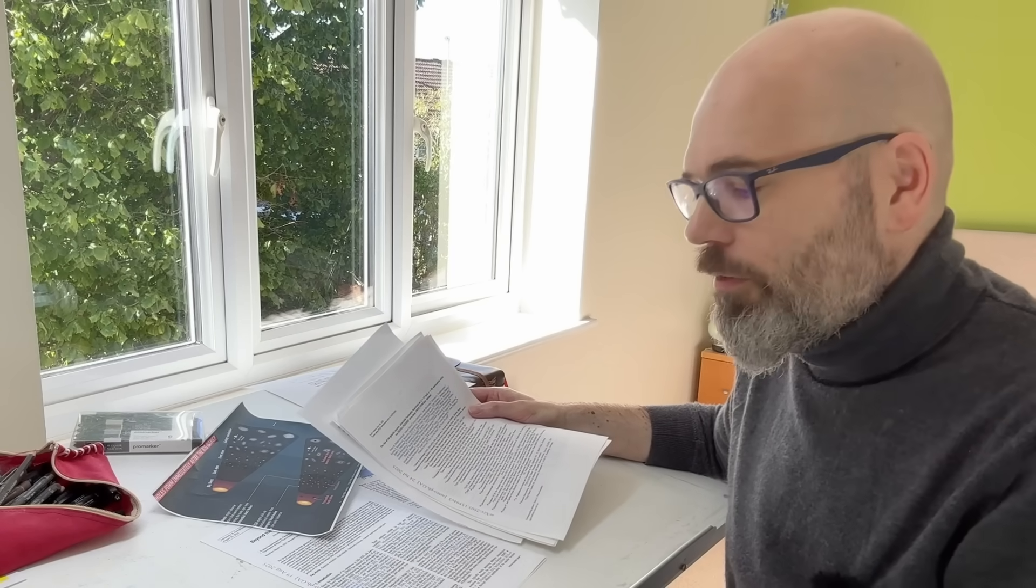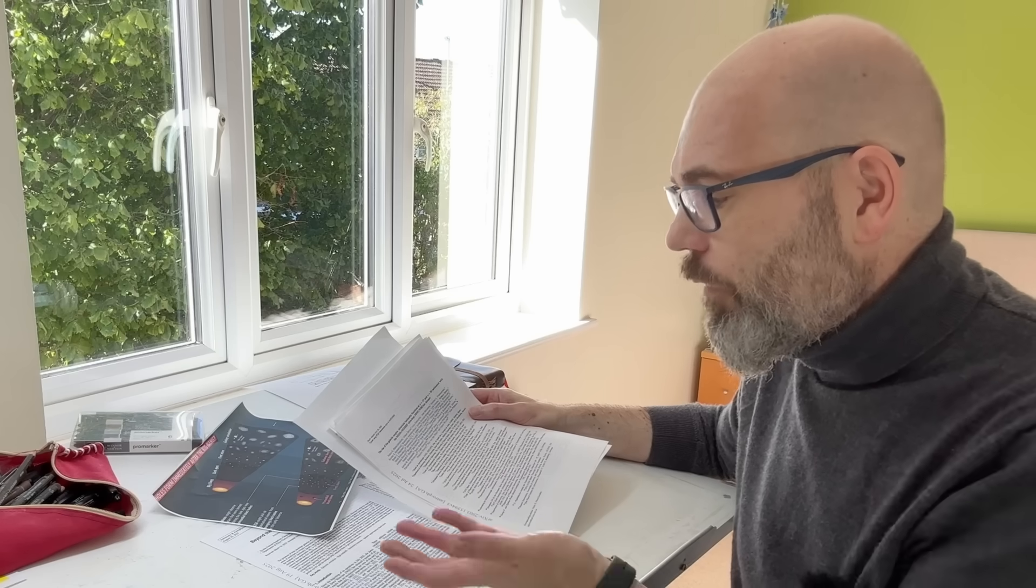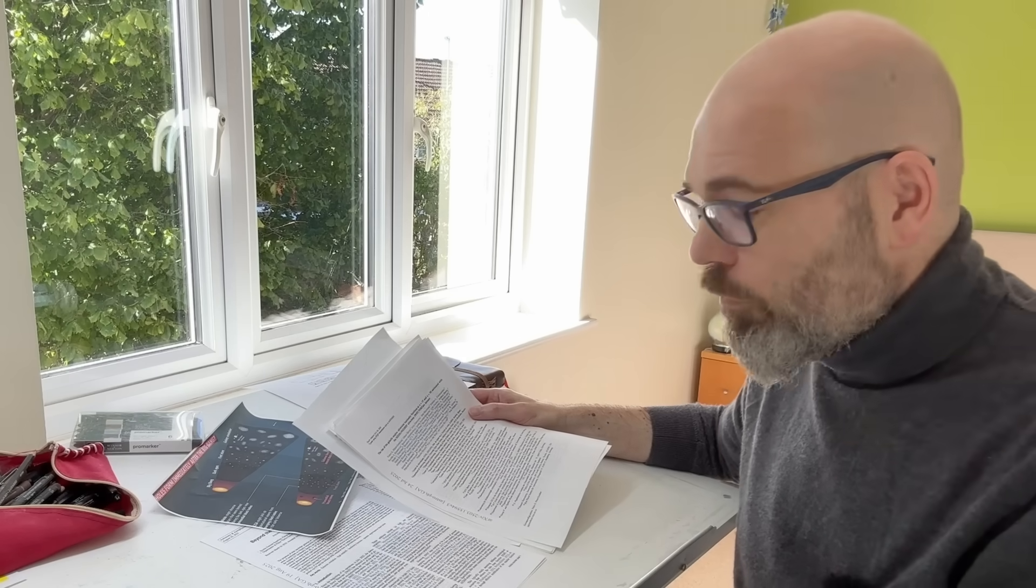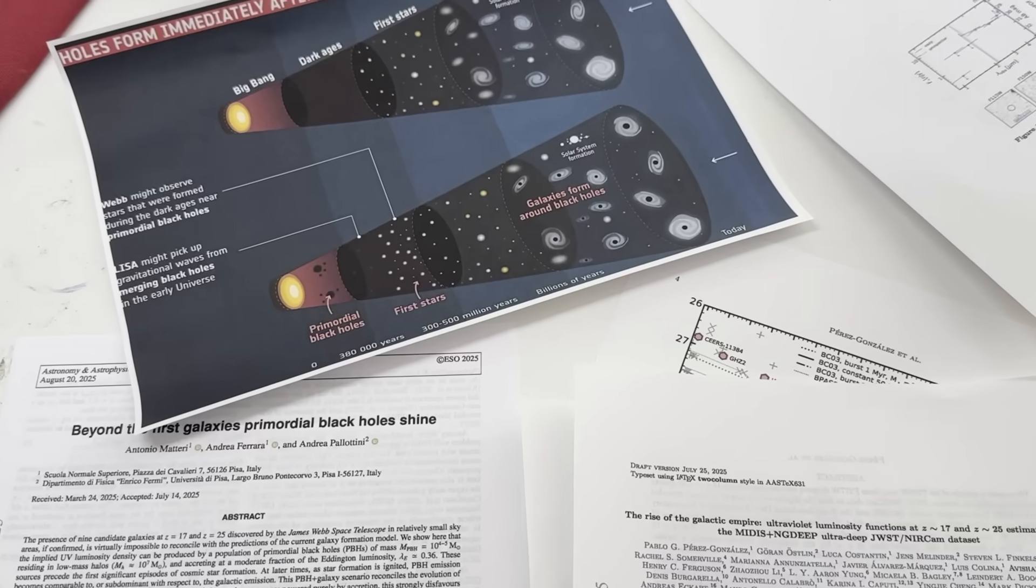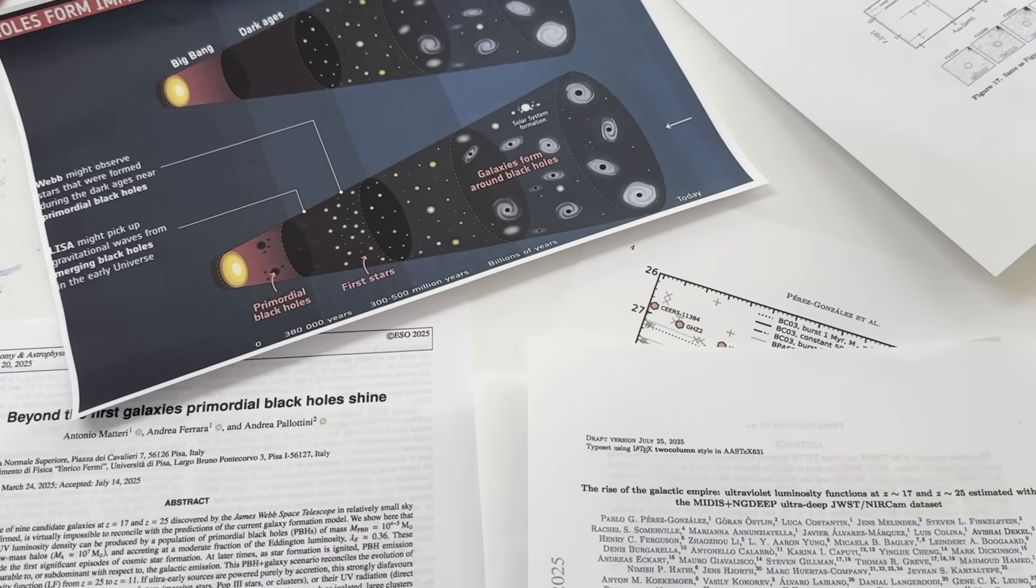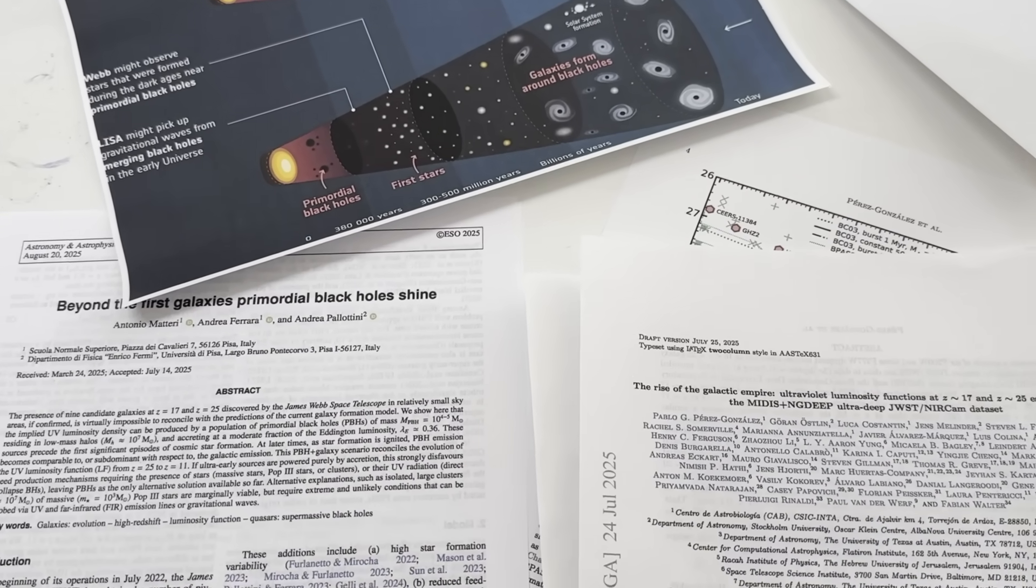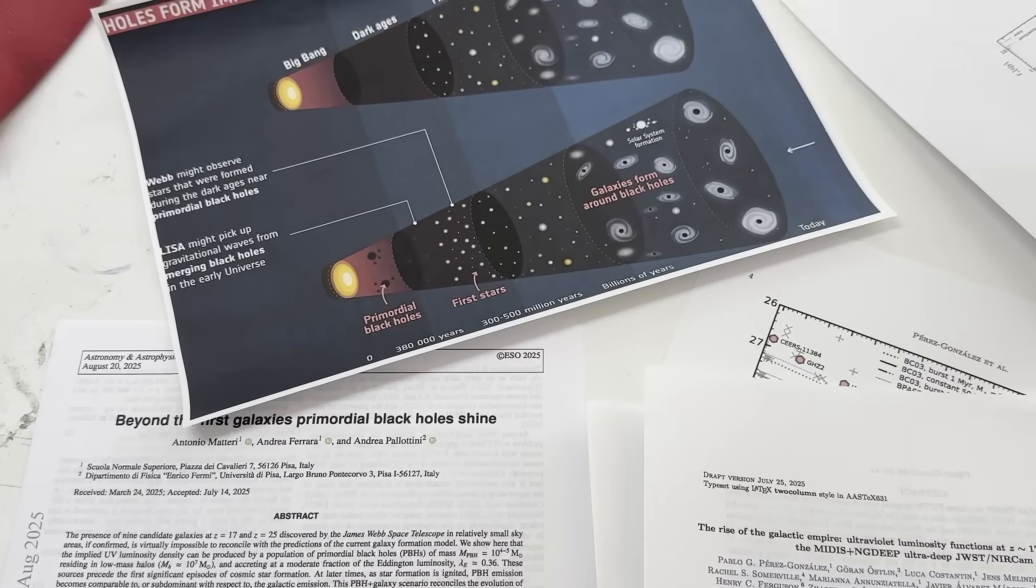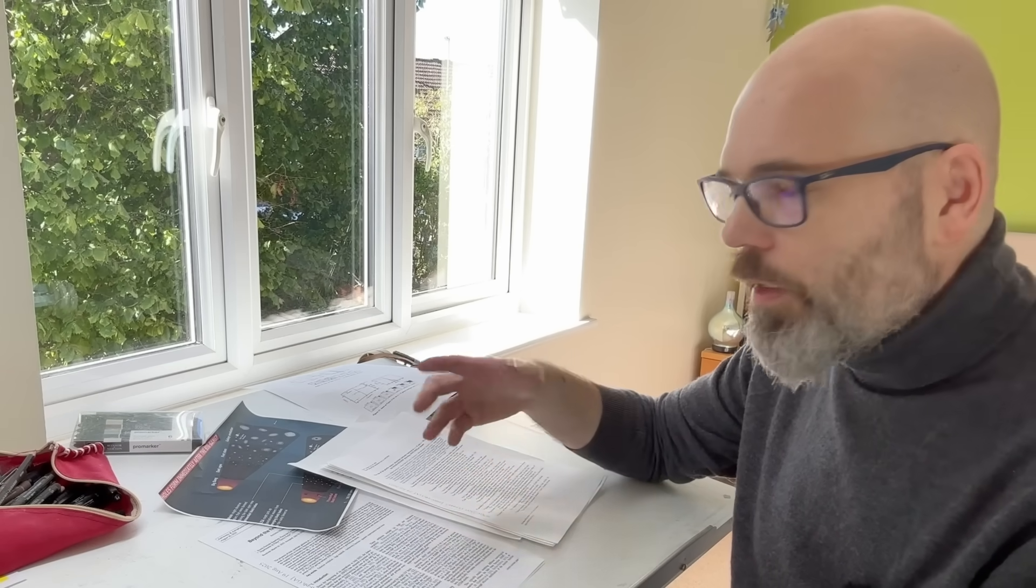So where does that leave us? The Webb telescope is showing us galaxies that, if real, don't just stretch the Big Bang timeline, they tear it apart. Astronomers desperate to patch the Big Bang have reached for two radical fixes. The first? Galaxies somehow converting over 60% of their gas into stars in almost an instant. The other? Well, an early universe filled with primordial black holes we can't see. Either way, the cures stretch credibility as much as the problem.